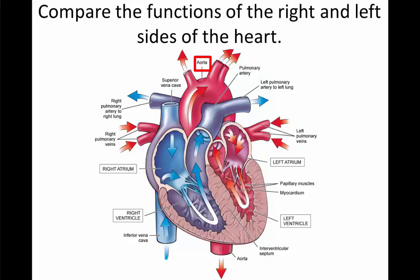The aorta branches off to bring blood to the arms, to the head, and it wraps around the heart to the descending aorta that then brings blood down to the lower part of the body. As the ventricles contract, the tricuspid and bicuspid valves close to prevent backflow of blood up into the atria from the ventricles. Likewise, the pulmonary and aortic semilunar valves close after blood has moved up into the aorta and pulmonary arteries, so that blood does not flow back from those vessels down into the heart itself.